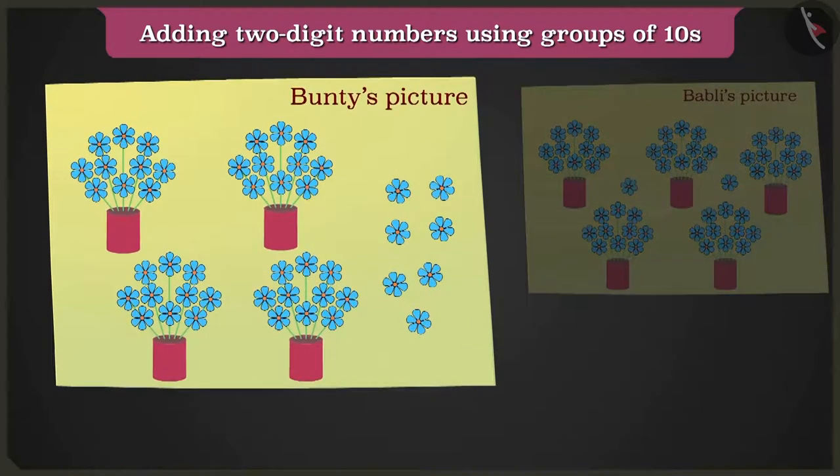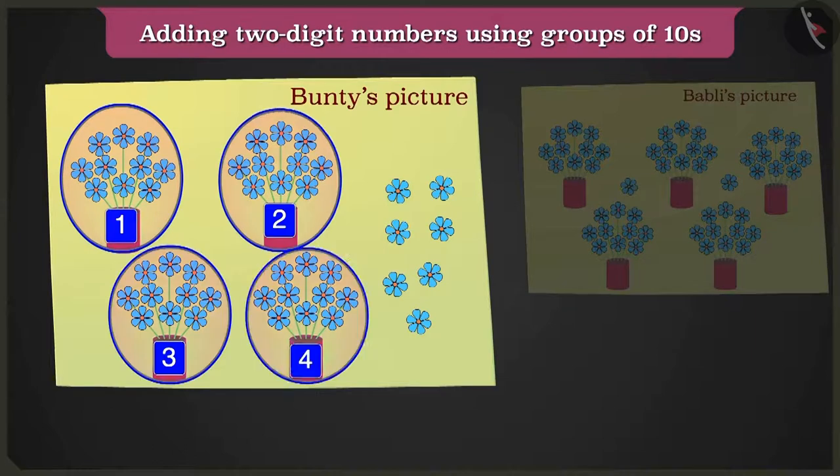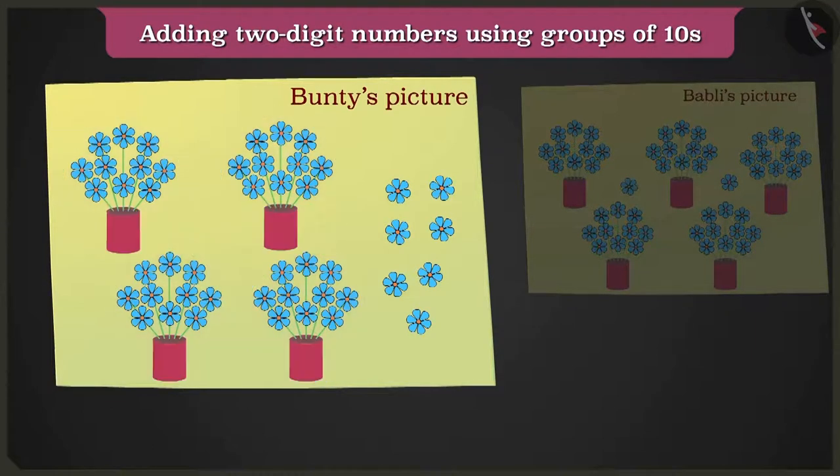Bunty's drawing paper has one, two, three and four flower pots of ten flowers each. And one, two, three, four, five, six, seven loose flowers.